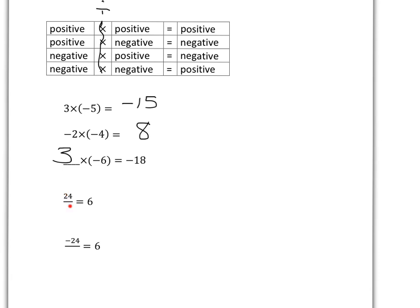We've got 24 divided by something must give me 6. Well, we want our answer to be positive, and we have the thing that's being divided as positive. So the thing underneath must also be positive. So it's 24 divided by 4.